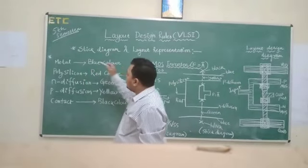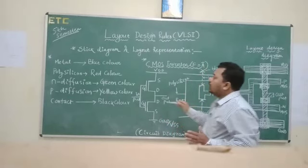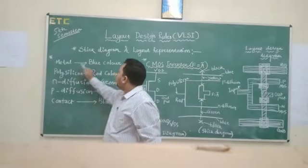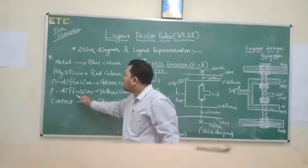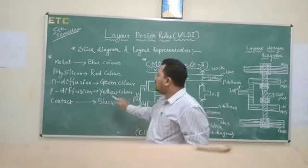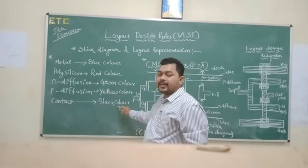Here we have different color variations for different layers. One is the metal layer for blue color, polysilicon layer for red color, N-diffusion layer for green color, P-diffusion layer for yellow color, and different contacts are represented by black color.